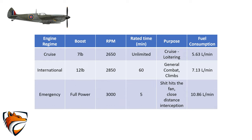At international power, fuel consumption increases by 27% to 7.1 liters or 1.57 gallons per minute — a full tank would be emptied after 54 minutes. The last official engine regime is emergency power: 3,000 RPM and 18 pounds of boost — all-out power. This gives best speed, climb rate, and acceleration, but comes at a cost. It is only possible for five minutes at a time and will suck the fuel tank dry in no time — fuel consumption is increased by another 52% compared to international power, at 10.82 liters or 2.38 gallons per minute.